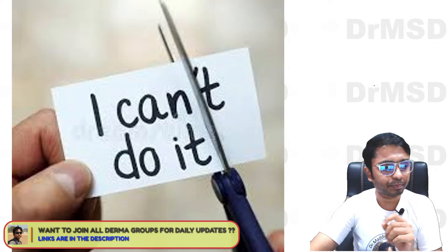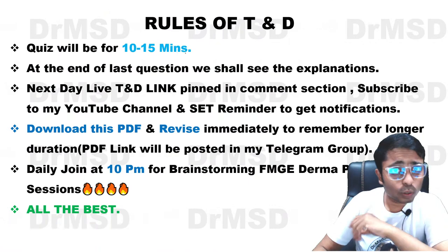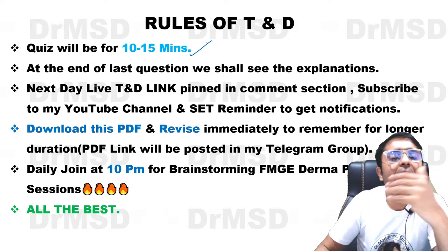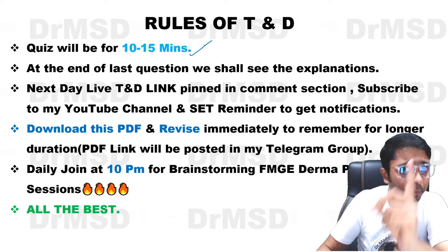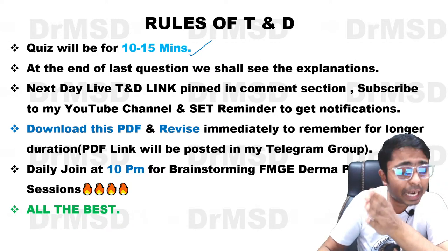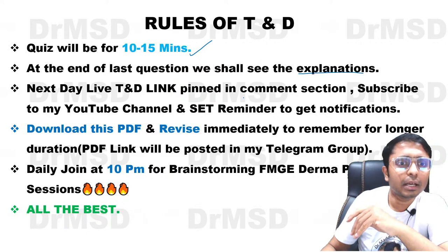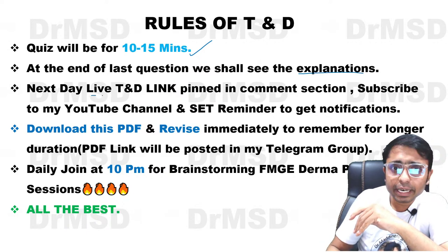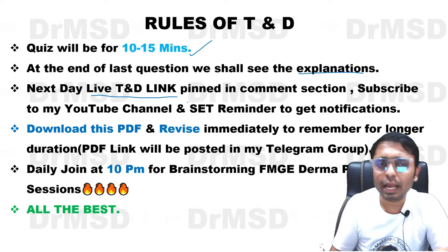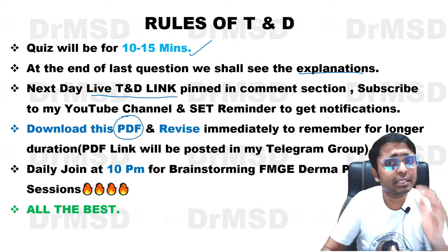Quick recap of the rules for this test and discussion: the quiz is going to be 10–15 minutes. I will show you the questions with question numbers. All you need to do is type in the question number followed by the option you feel is the right answer in the live chat. At the end of all the questions, we will have the explanation part. The next day live TnD link will be pinned in the comments or posted in the Telegram group.